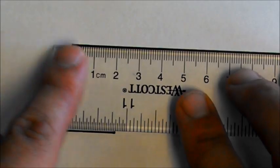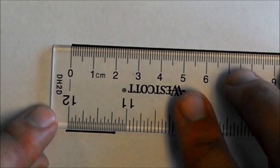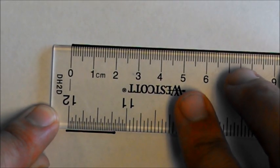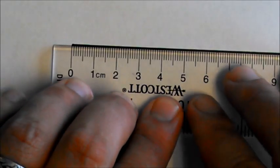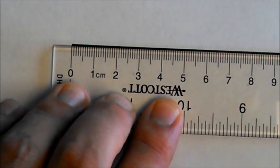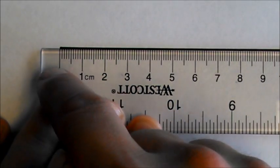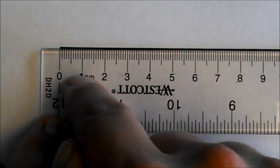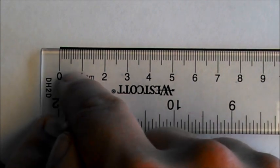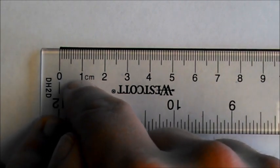So here we are. We're looking at this line right here, and you can see I'm trying to line that up as close as I can so we know where that is. Now, you'll notice there are 10 lines between the zero and the one. Those are millimeters. There are 10 millimeters in one centimeter.